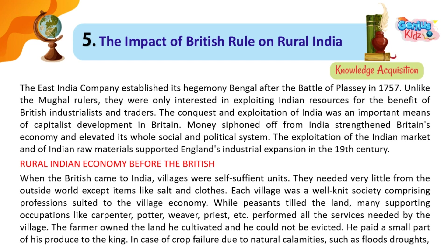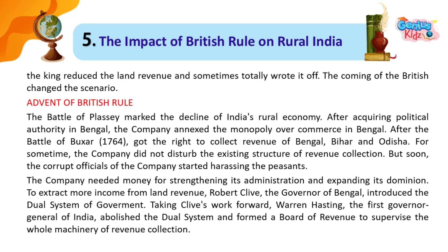In case of crop failure due to natural calamities such as floods or droughts, the king reduced the land revenue and sometimes totally wrote it off. The coming of the British changed the scenario.